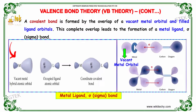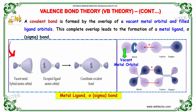A covalent bond is formed by the overlap of a vacant metal orbital and a filled ligand orbital. Here is the vacant metal hybrid atomic orbital. The occupied ligand atomic orbital forms the coordinate covalent bond between them.